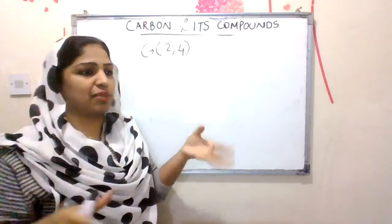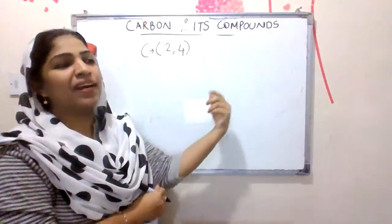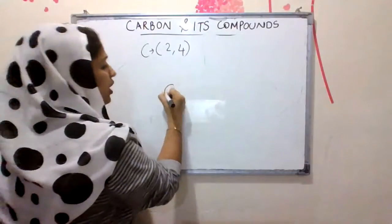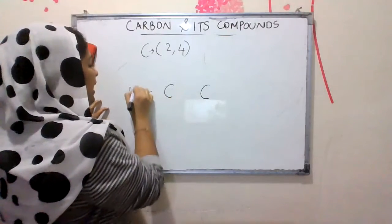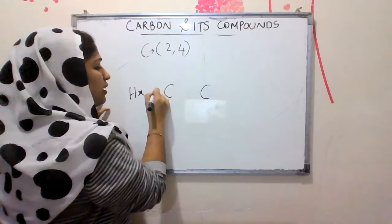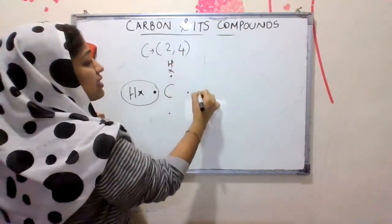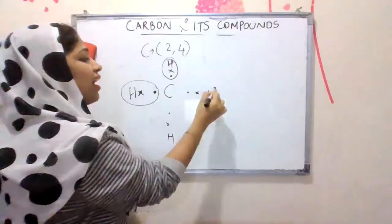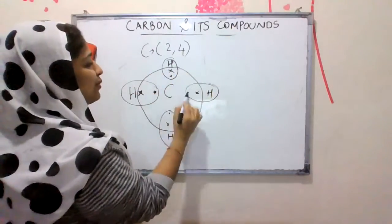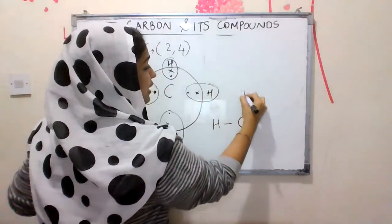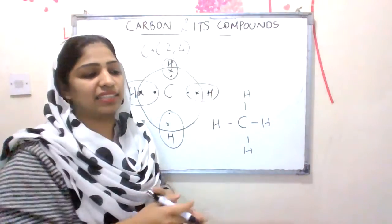If we look at carbon, carbon has 4 electrons in its outermost shell. You can share one electron, two electrons, three electrons — there are many possibilities. Carbon can share all 4 electrons. If carbon bonds with hydrogen, carbon shares 4 electrons — one with each of four hydrogen atoms — giving carbon a complete octet and hydrogen a duplet.